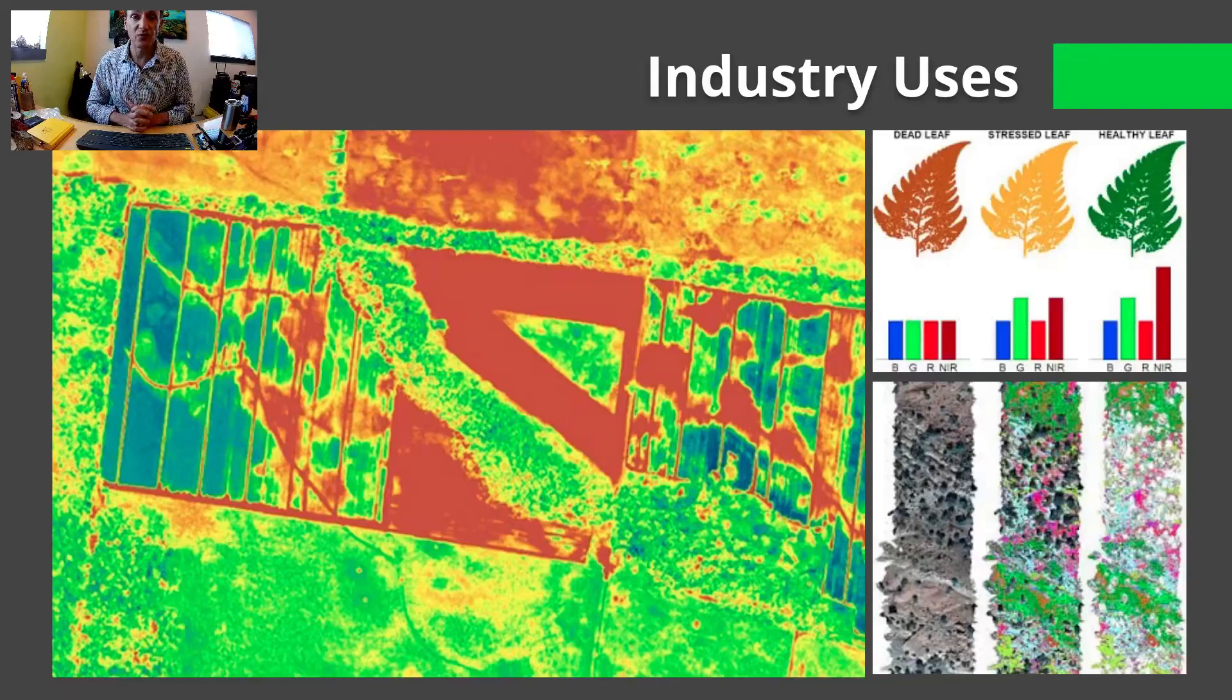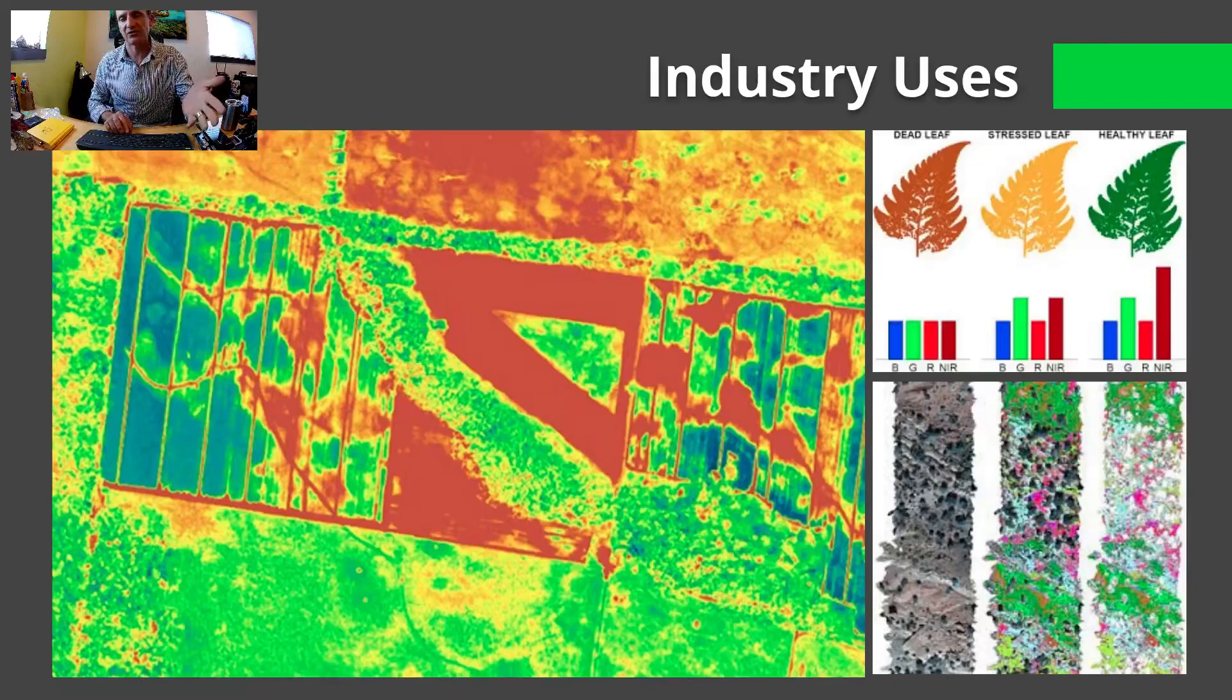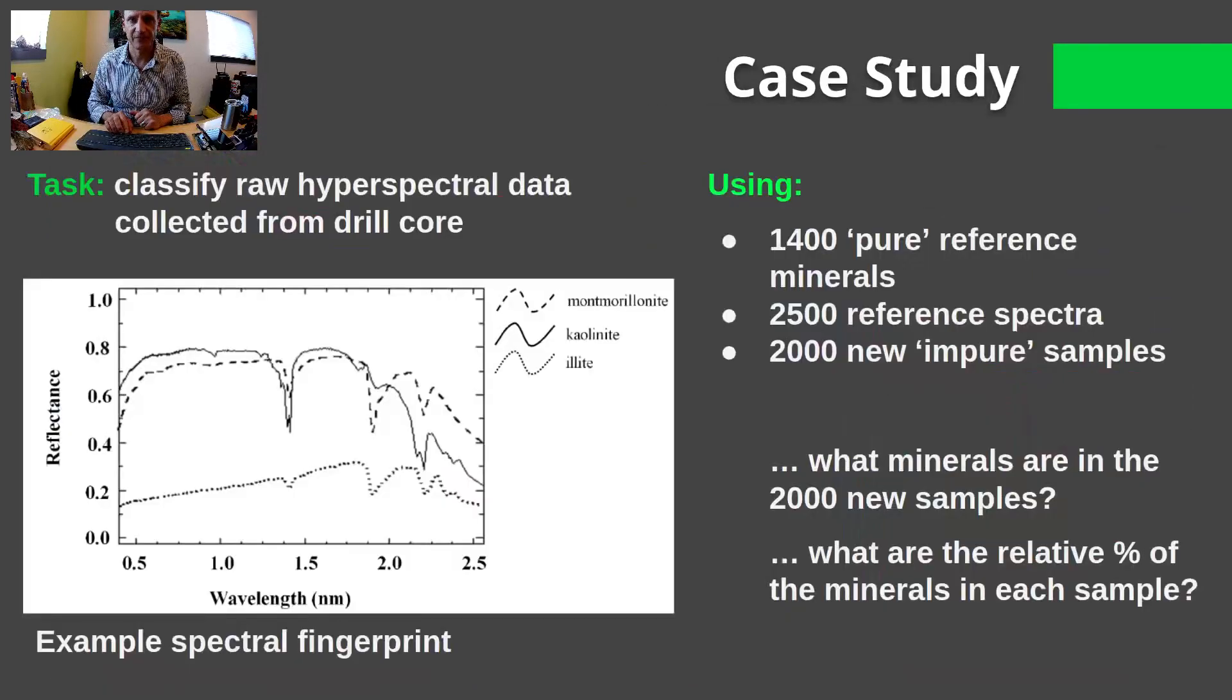Industry uses are KNN is great when we're looking at hyperspectral imagery, for instance. In this case, agriculture, looking at plant health, or even hyperspectral imagery of bare ground.